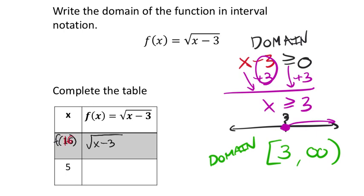So replace the x with 16, and you get the square root. 16 minus 3 is 13. Now if that could be simplified, or if it was a perfect square, we would, but it can't, so it's done.